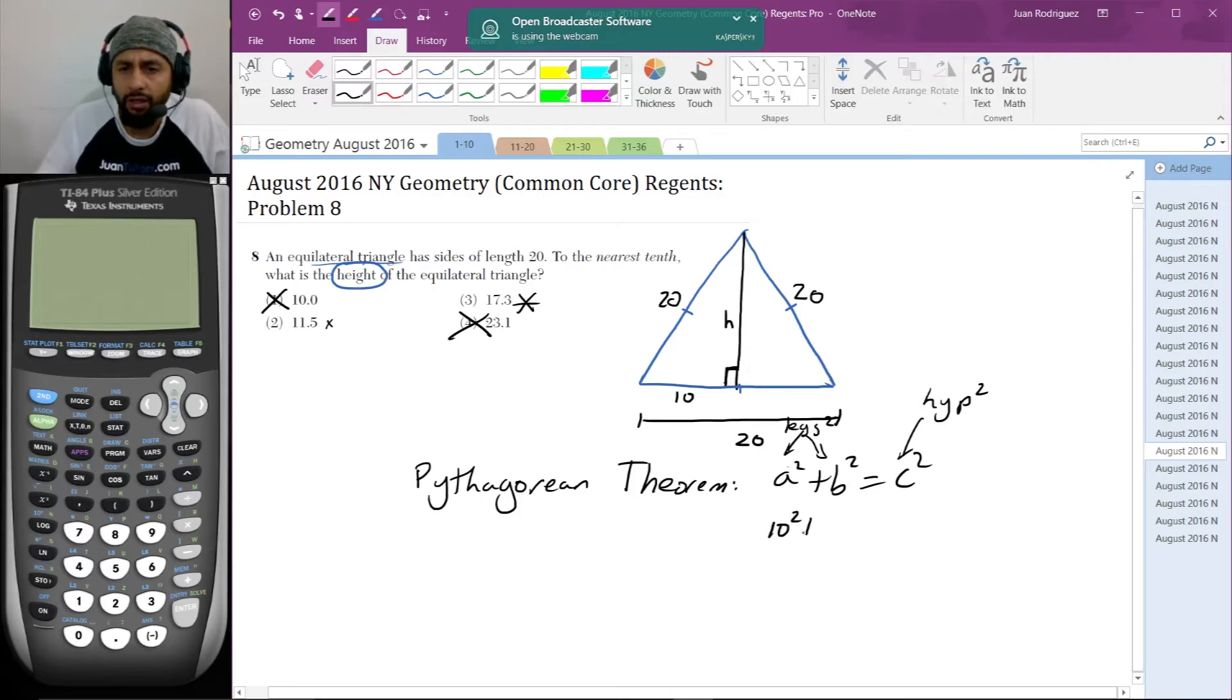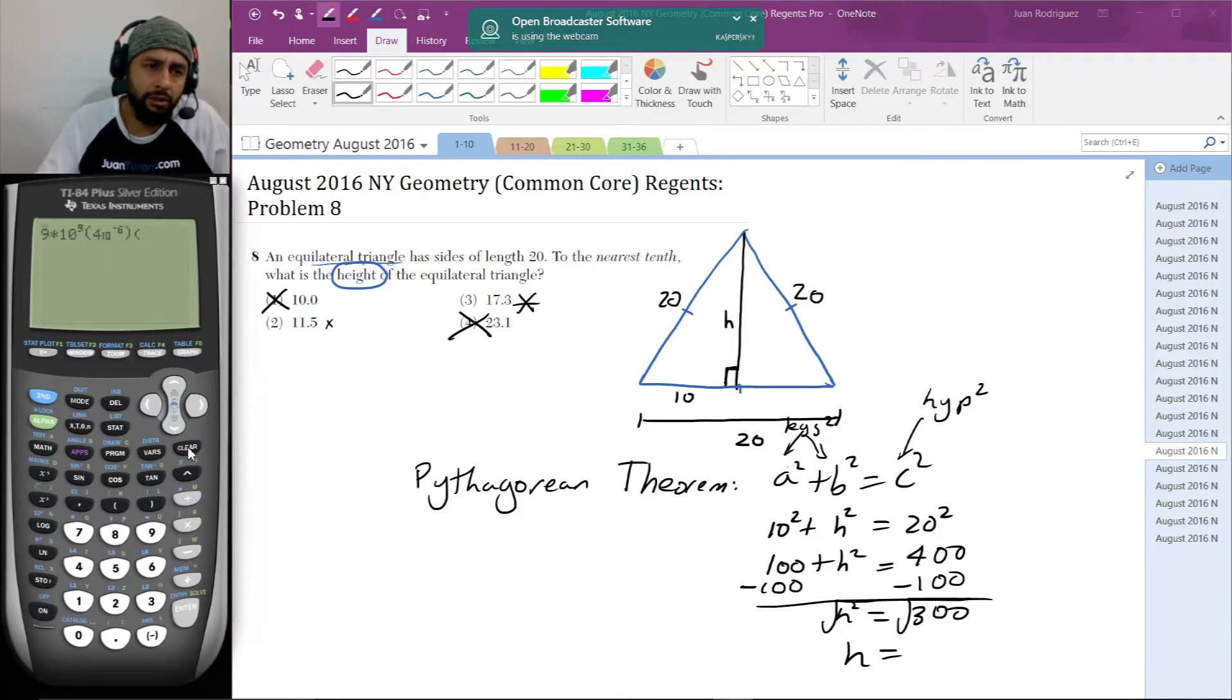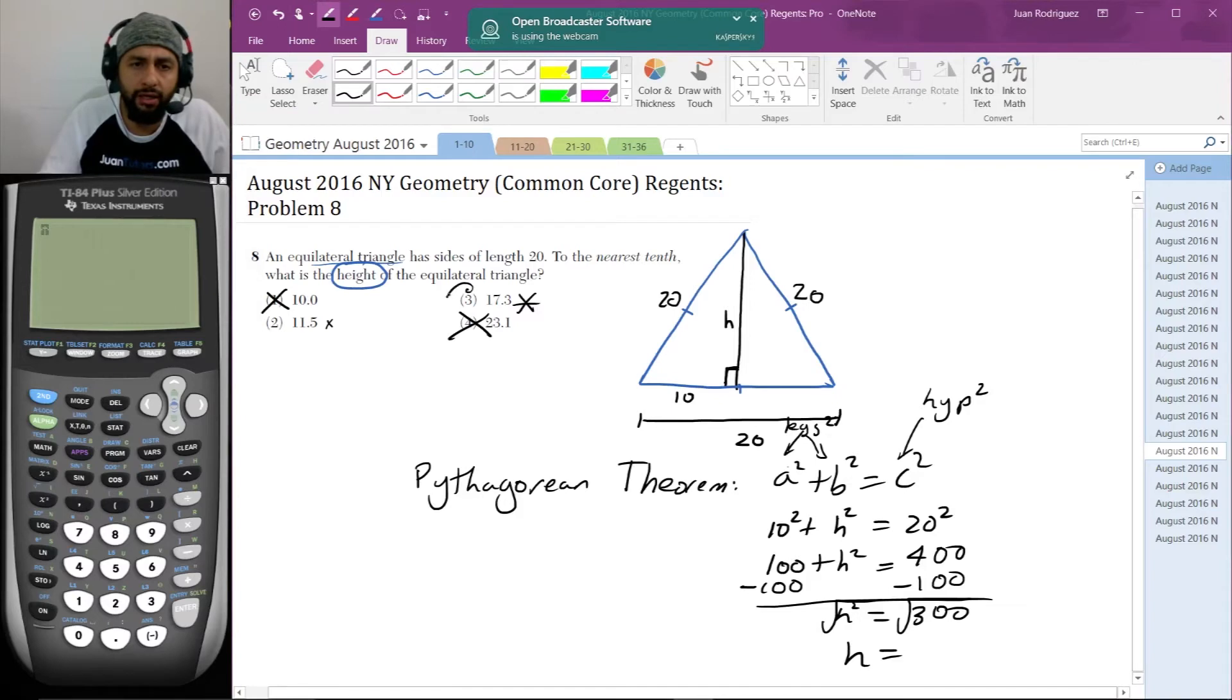So 10² + h² = 20². I just do the algebra at this point: 100 + h² = 400. Subtract 100, and you get h² = 300. Take the square root, and h = √300. It's definitely bigger than 14 squared, so that's definitely going to be my answer already.